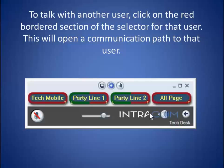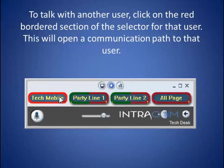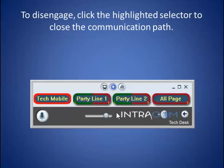Clicking a selector will open a communication path to that user. As you can see, it becomes highlighted to show you are now talking with that user. To disengage, click the highlighted selector to close the communication path. That deselects the communication path to that user.